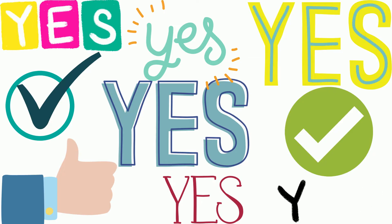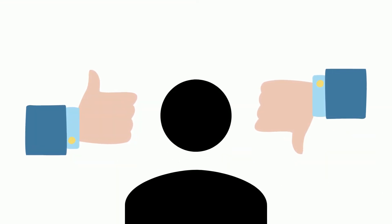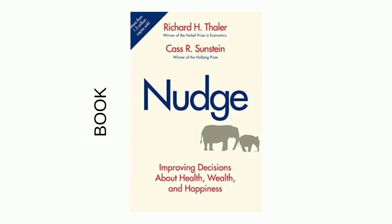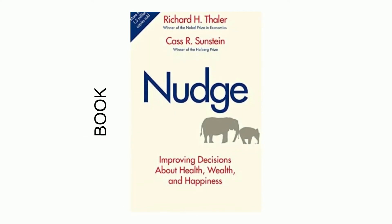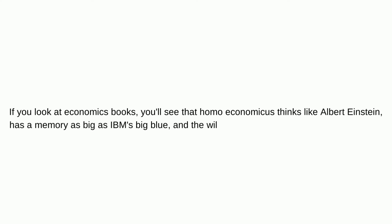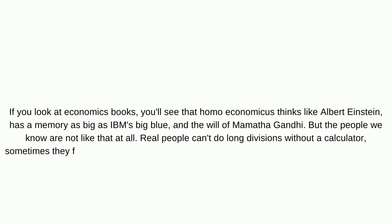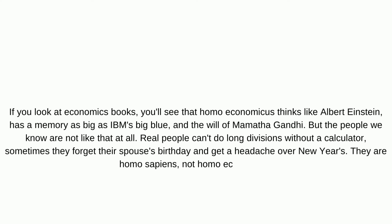But we think your answer is yes. Since the early days of the theory, many people have thought the same way, and many criticisms of the homo economicus human model have emerged. Nudge: Improving Health, Wealth, and Happiness by Richard Thaler and Cass Sunstein is a good example of these criticisms. In the work, the authors write: 'If you look at economics books, you'll see that homo economicus thinks like Albert Einstein, has a memory as big as IBM's Big Blue, and the will of Mahatma Gandhi. But the people we know are not like that at all. Real people can't do long divisions without a calculator, sometimes they forget their spouse's birthday and get a headache over New Year's. They are homo sapiens, not homo economicus.'